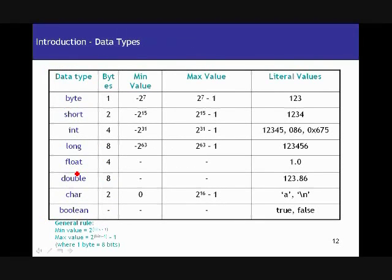Data types. A data type is nothing but assigning a type to a given literal in your Java program. You can have different numbers in a Java program. In a student class, a roll number represents a number — if there are 10 students in the class, you will have roll numbers 1 through 10, and it's stored as a number.